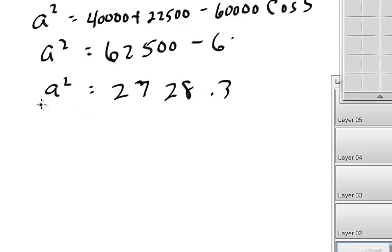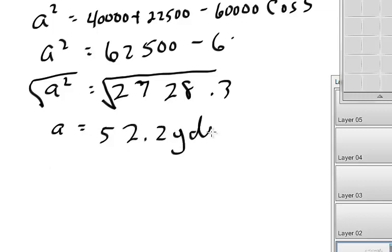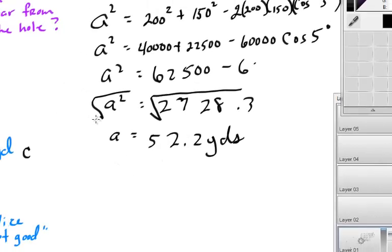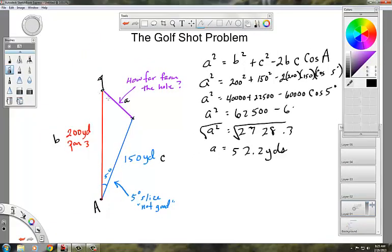2,728.3 And now we have to, of course, square root this. So we square root both sides. Sorry, I got a little sloppy there. A equals, and then we square root this, which is 52.2 yards. And that is rounded a little bit from the hole. So this is 52.2 yards away.